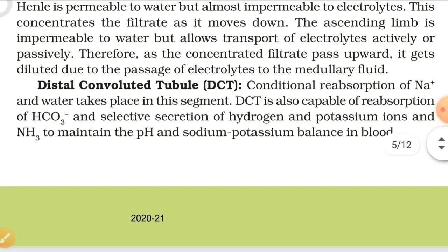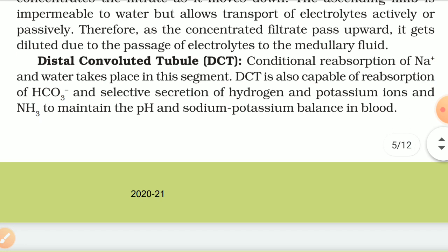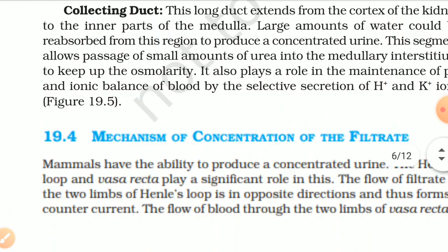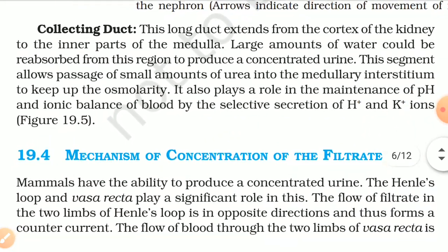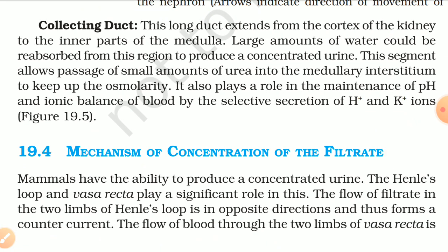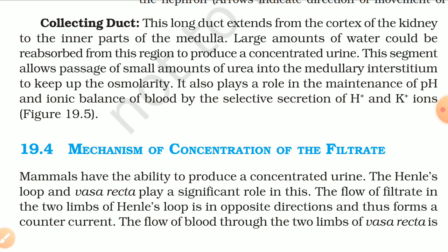Distal convoluted tubule (DCT): Conditional reabsorption of Na+ and water takes place in this segment. DCT is also capable of reabsorption of bicarbonate ions and selective secretion of hydrogen and potassium ions and ammonia to maintain pH and sodium-potassium balance in blood. Collecting duct: This long duct extends from the cortex of the kidney to the inner part of the medulla. Large amounts of water can be reabsorbed from this segment to produce a concentrated urine. This segment allows passage of small amounts of urea into the medullary interstitium to maintain osmolarity, and plays a role in maintenance of pH and ionic balance of blood by selective secretion of H+ and K+ ions.